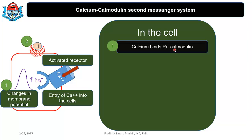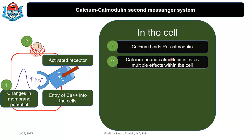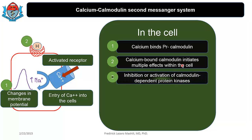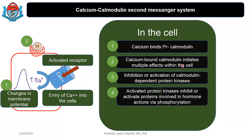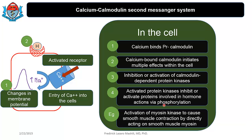When calcium is in the cell, it binds to a protein known as calmodulin to form a calcium-calmodulin complex. Just as a hormone-receptor complex is an activated entity, the calcium-calmodulin complex is also activated and initiates multiple effects within the cells. These effects can be inhibition or activation of protein kinases — the phosphorylators. Once you activate the kinases you have phosphorylation or dephosphorylation, leading to activation or deactivation. A good example is activation of myosin kinase to cause smooth muscle contraction by directly acting on smooth muscle myosin.